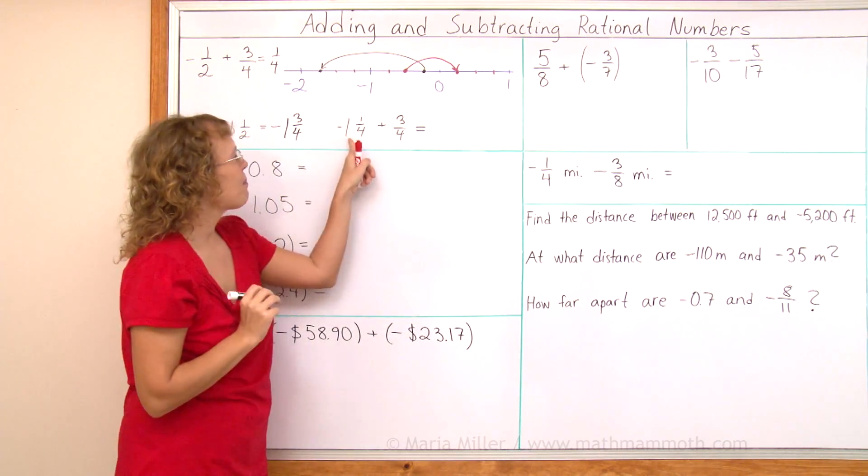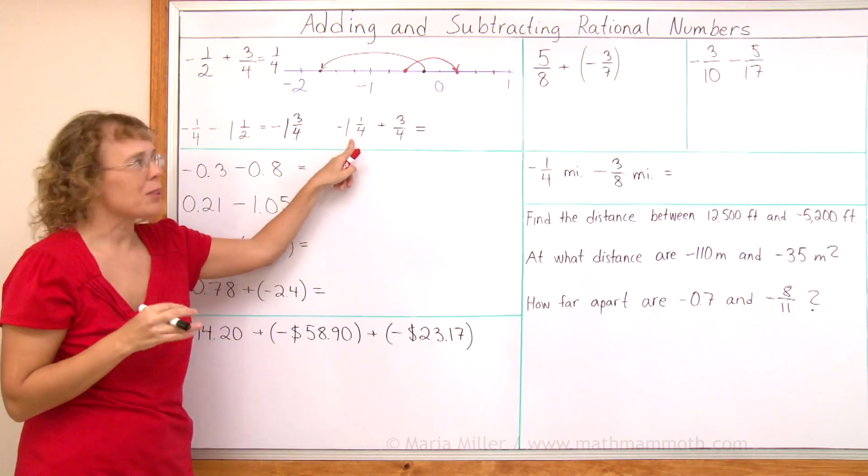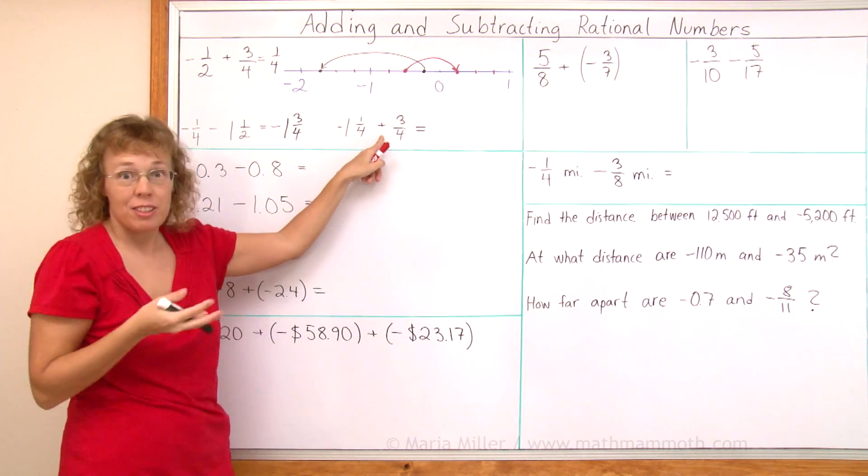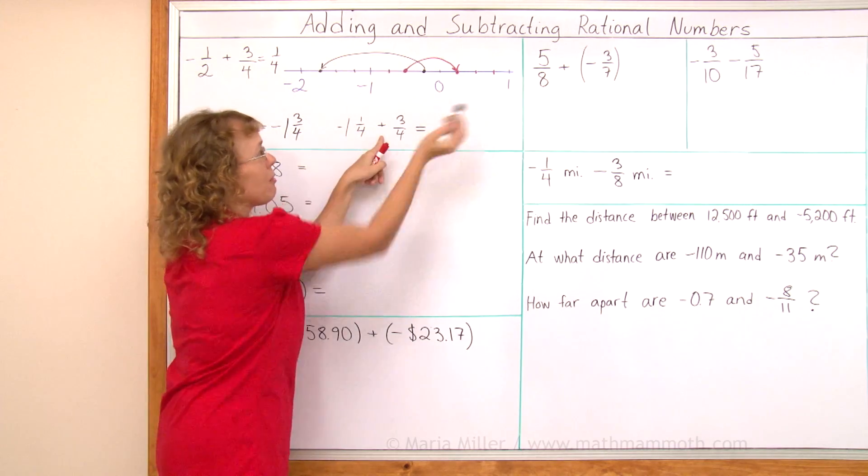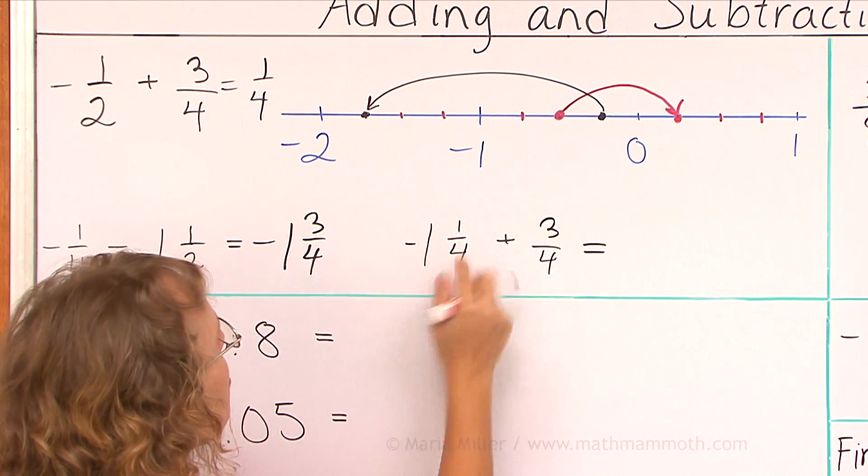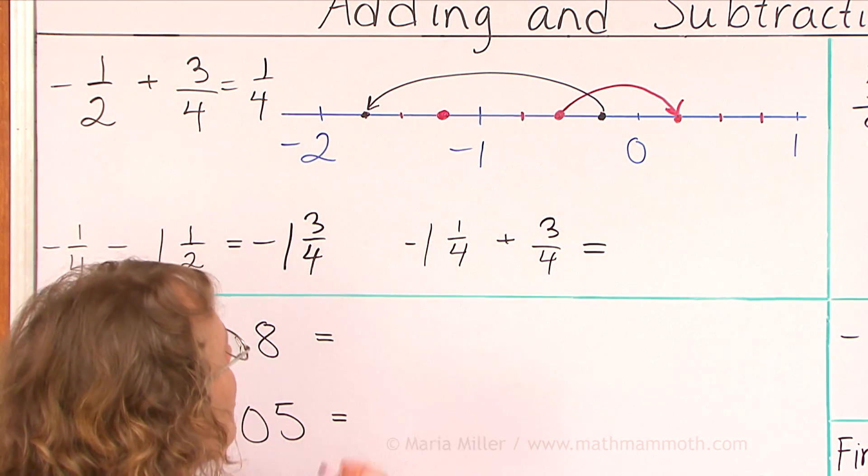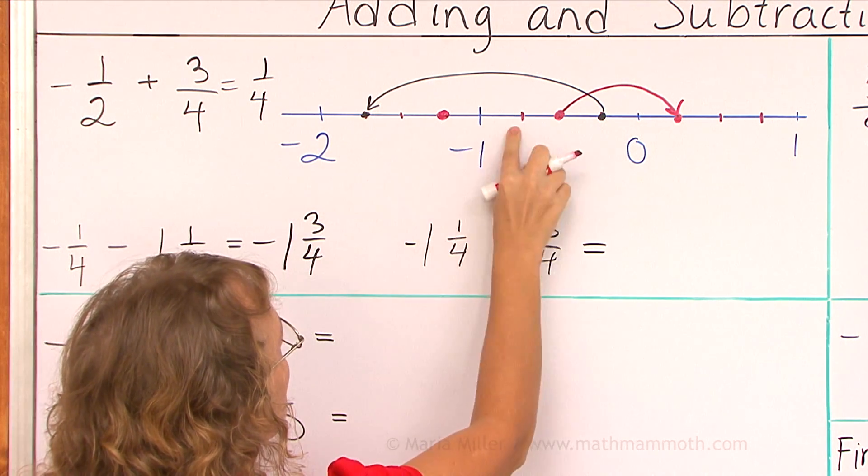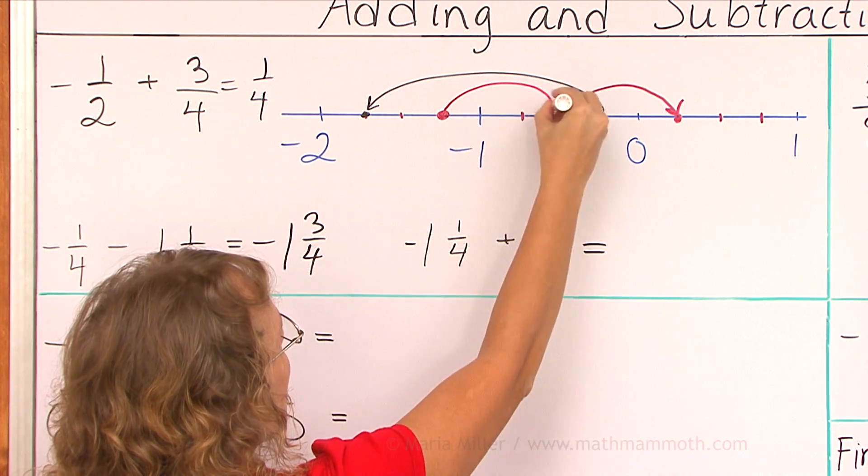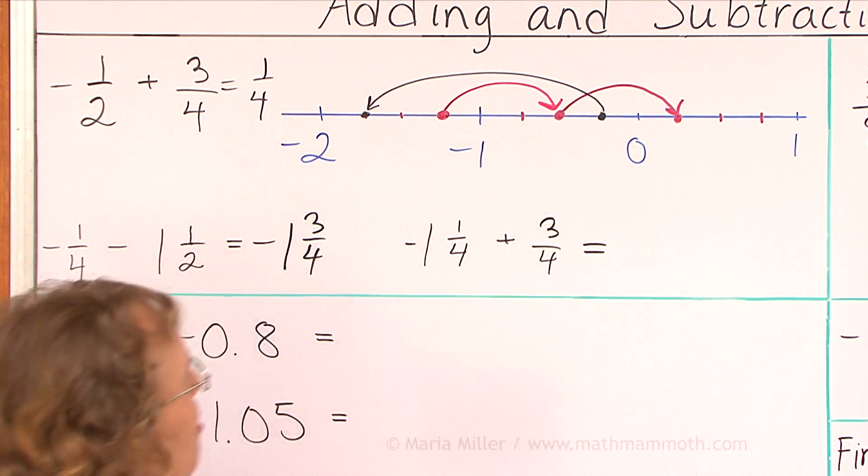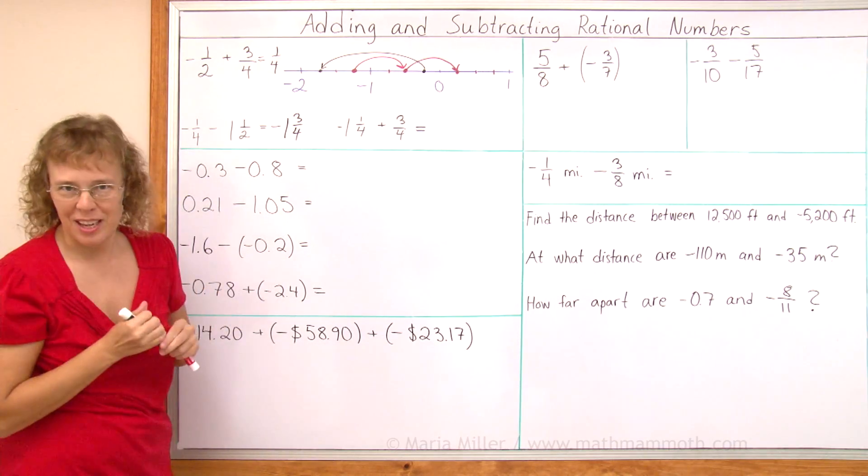And our last one. Start at negative one and one-fourth, and then add three-fourths or jump towards the right. Negative one and one-fourth would be here. And then three-fourths, over there. That's where we started with the first problem, so that's negative one-half.